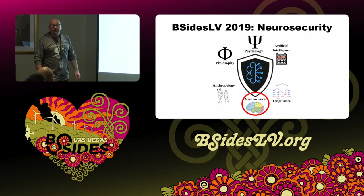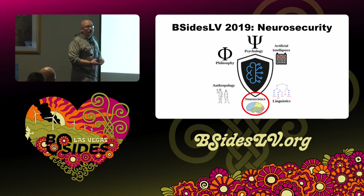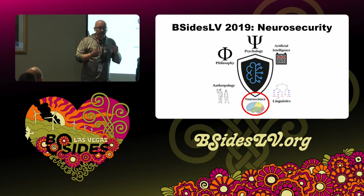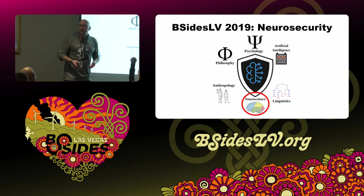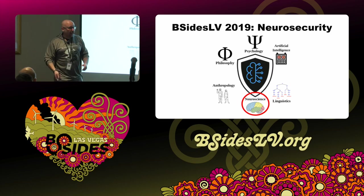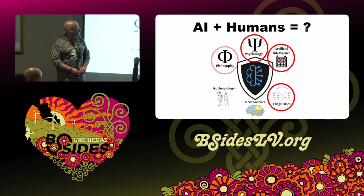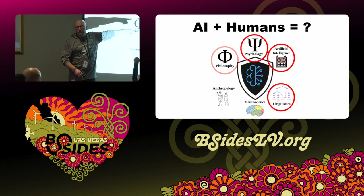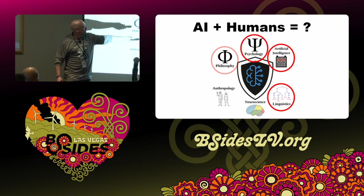I've got this nonprofit happening called the Cognitive Security Institute. We talk about these kinds of topics. If it's of interest to you, I encourage you to go to the website, sign up to be on the email distro list. We have a YouTube channel with talks on it. With that, I'm going to kick it over to Dr. Sawyer to talk specifically about AI and humans, engaging the areas of psychology, AI, and linguistics.